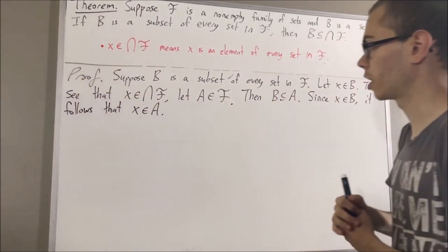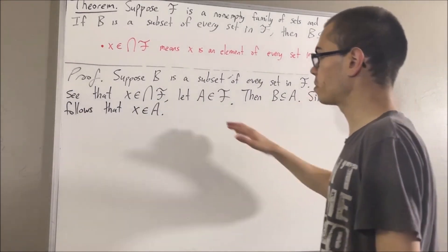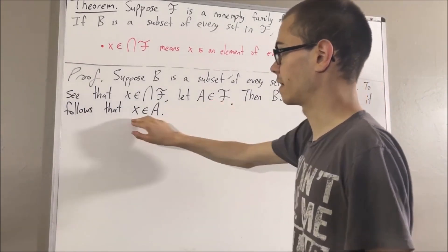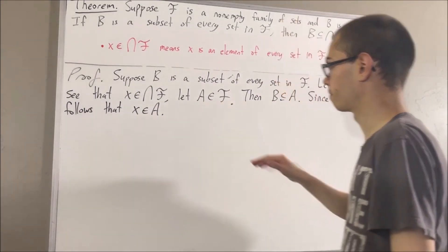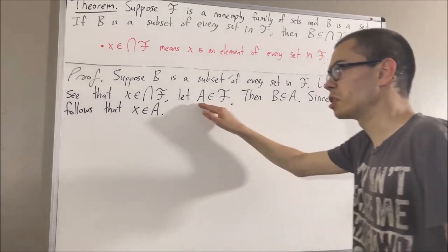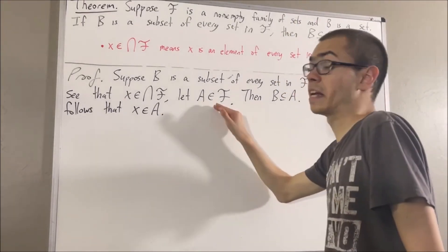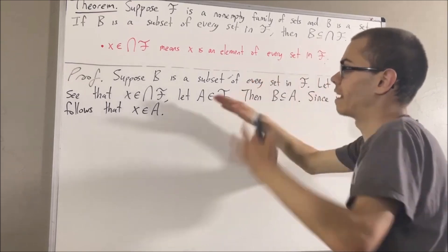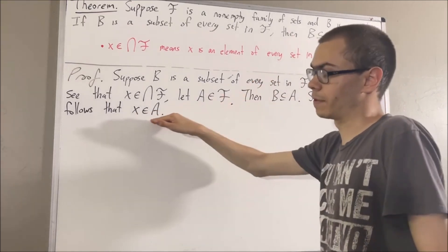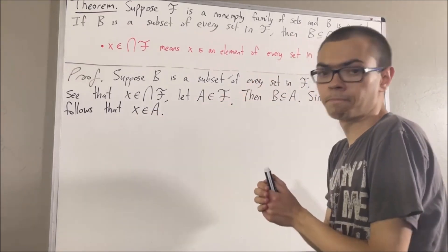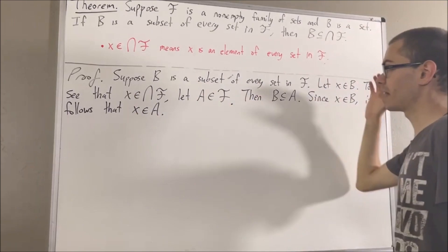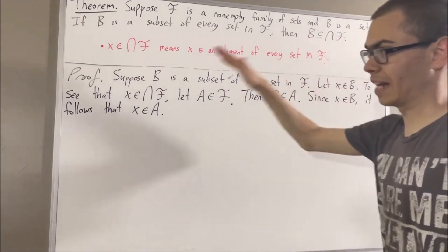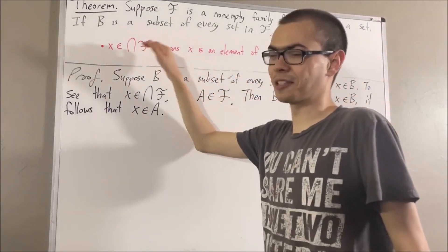So putting this together, we see that under the assumption that a is an element of f, it follows that x is an element of a. Since a was an arbitrary set in f, this means that for all sets a in f, x is an element of a. In other words, we've shown that x is an element of every set in f, so x is an element of the intersection of f.